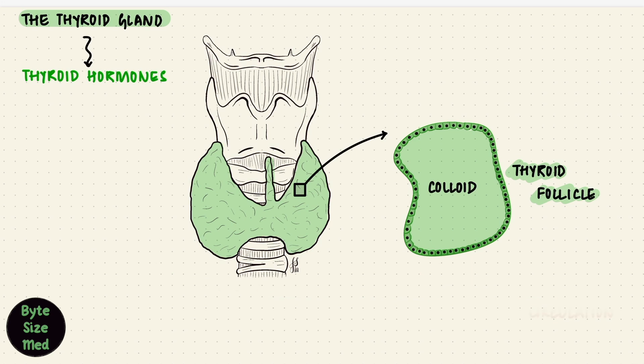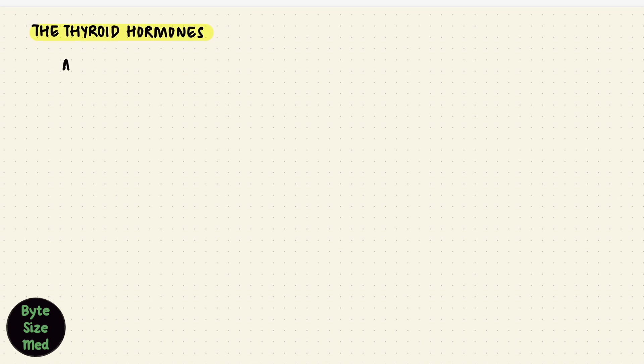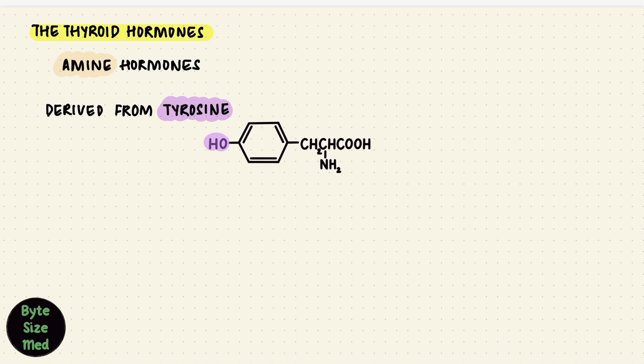These cells are the ones that make the thyroid hormones. They are the follicular epithelial cells or thyrocytes. And when you're studying the steps of this synthesis, it can get overwhelming, but hopefully I can help you out a bit. Let's start with what these hormones are. The thyroid hormones are amine hormones. They are derived from an amino acid, tyrosine. I know chemical structures can get frustrating, but bear with me, this will actually make understanding the rest easier.